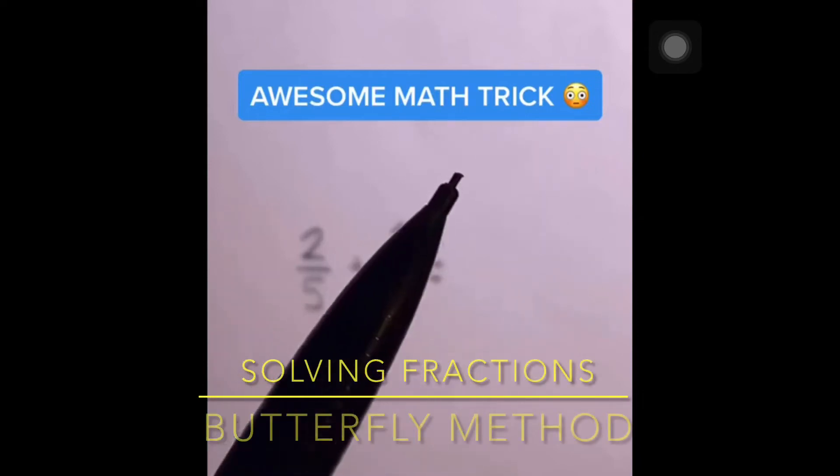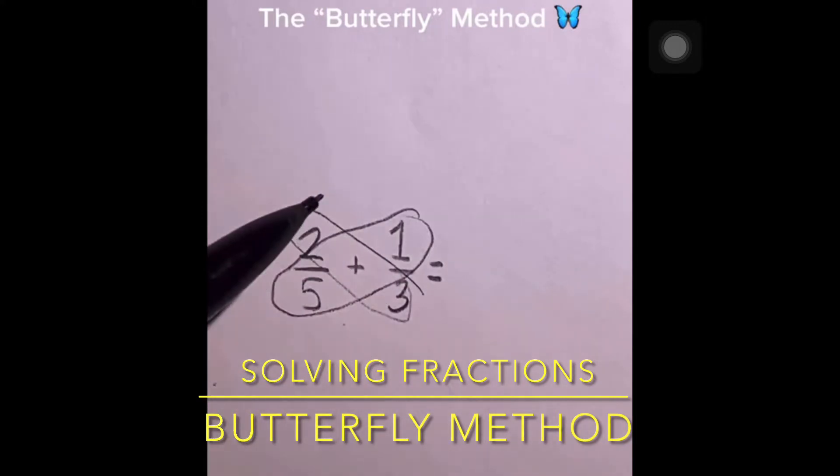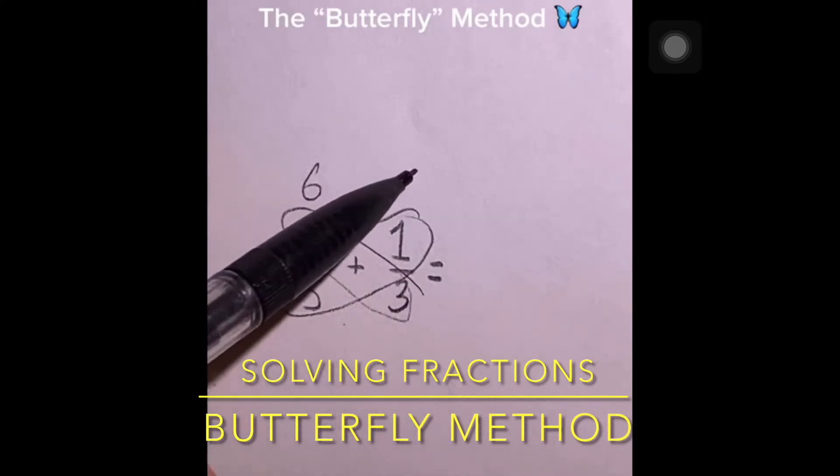The absolute best method for adding and subtracting fractions is called the butterfly method. Step one is to cross-multiply, so we do 2 times 3 and 1 times 5. 2 times 3 is 6, 1 times 5 is 5.